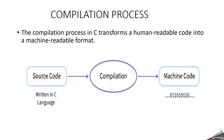In our previous video, we discussed about basics of C. But in this video, we are going to discuss about when you type a C program, how the compiler will behave and what all are the processes that take place during compilation. Basically, the compilation process in C transforms a human-readable code into a machine-readable format. Human-readable code means whatever C program the user or programmer will type, and machine-readable format means the format that the machine will understand.